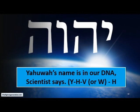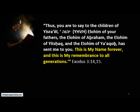Yahuwah's name is in our DNA, a scientist says. So we have the Y-H-V, some write it with W and H. In Exodus chapter 3, verses 14 and 15, it says: 'Thus you are to say to the children of Israel, Yod-Heh-Wav-Heh, Elohim of your fathers, the Elohim of Abraham, the Elohim of Isaac, and the Elohim of Jacob, has sent me to you. This is my name forever, and this is my remembrance to all generations.'